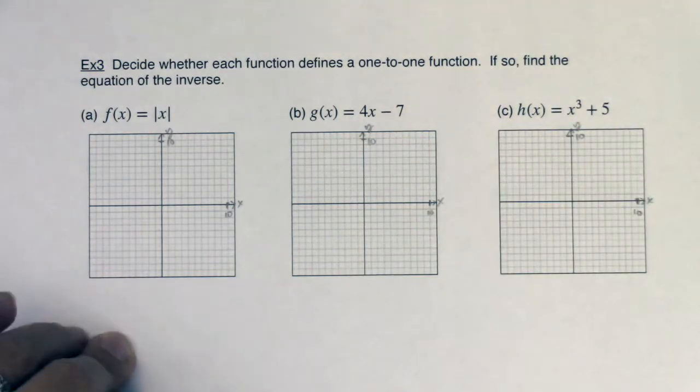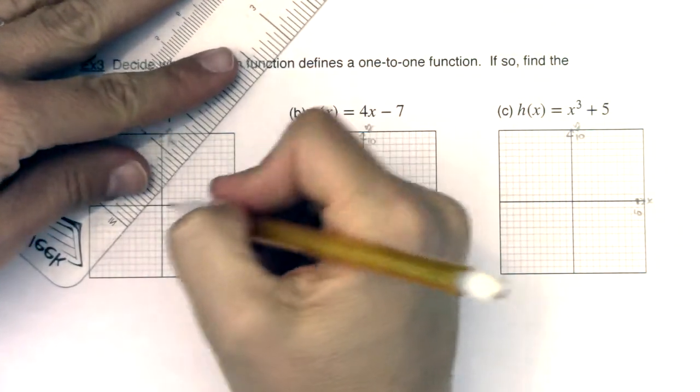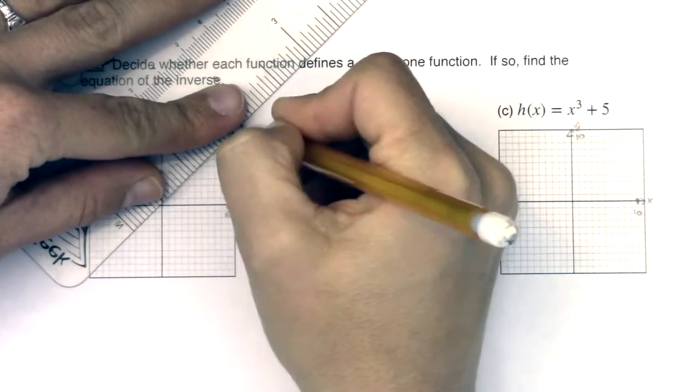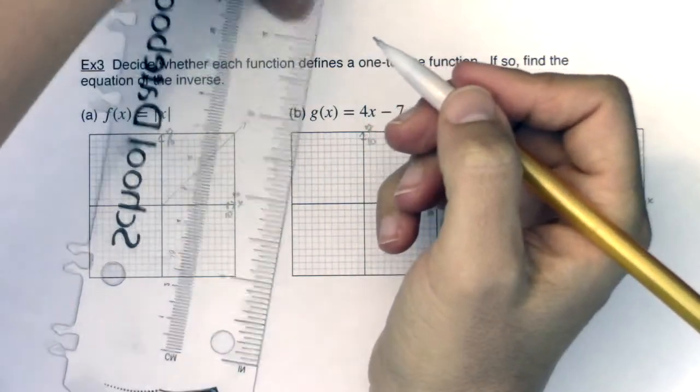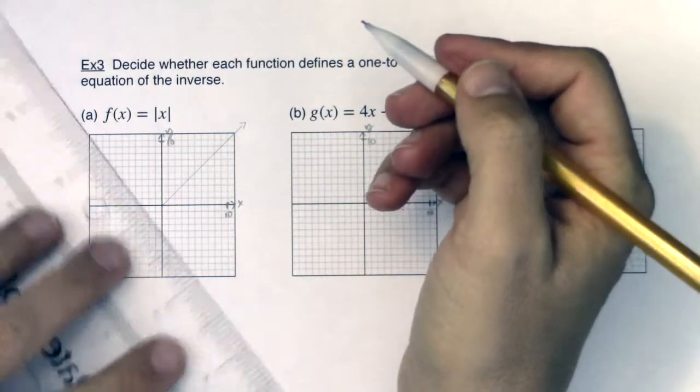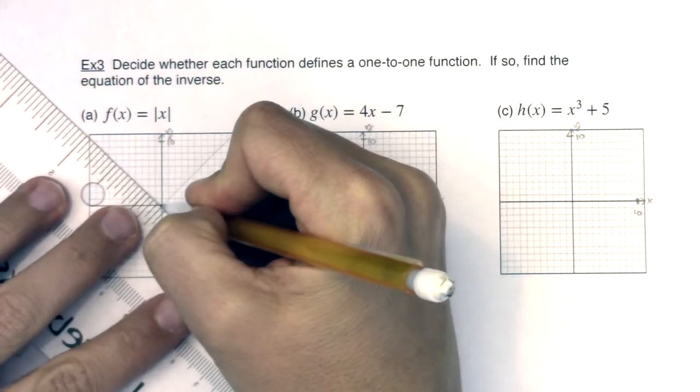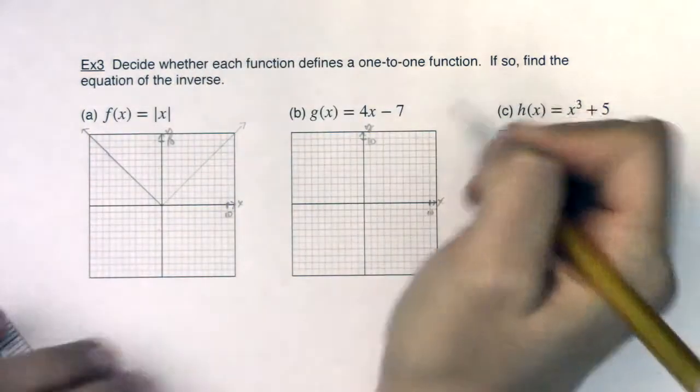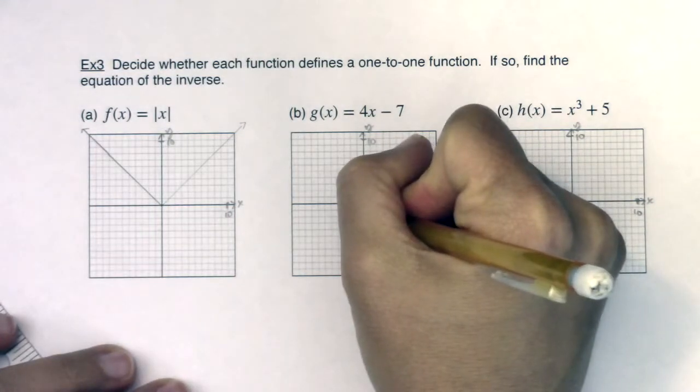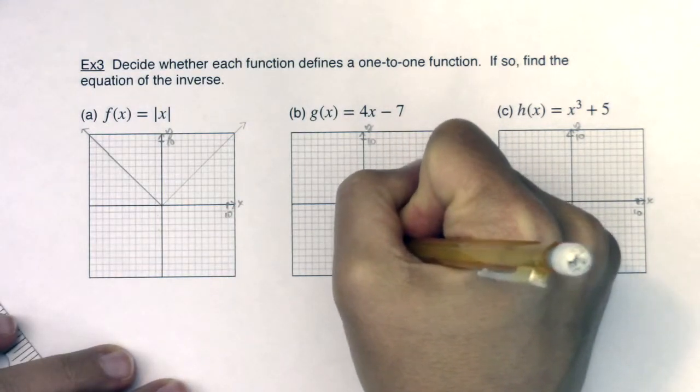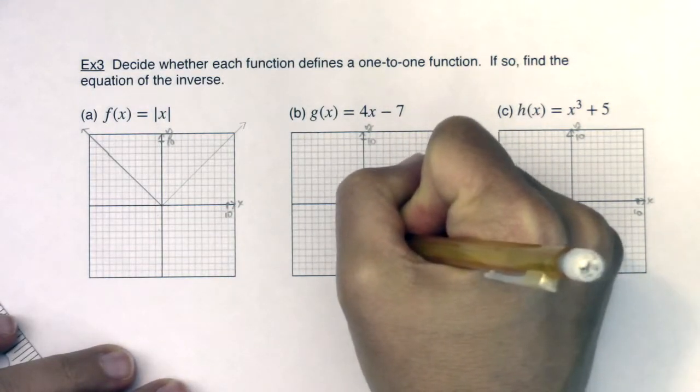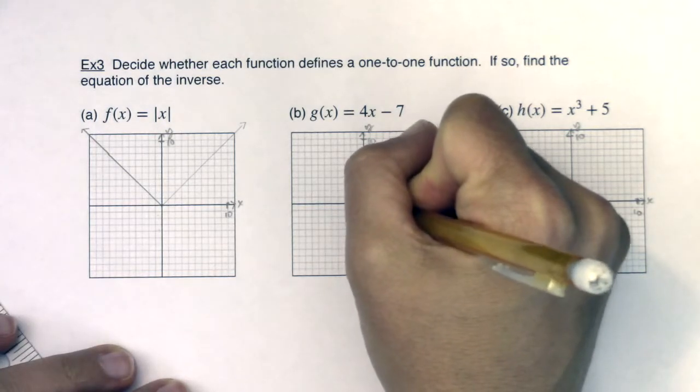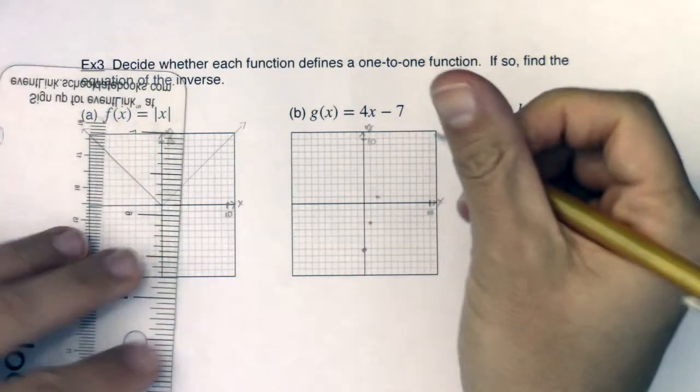Let me draw in the absolute value function. I know it's a v with its vertex at the origin. This is a line, let's go to negative 7. Slope's 4, so up 1, 2, 3, 4, over 1. That looks pretty good.